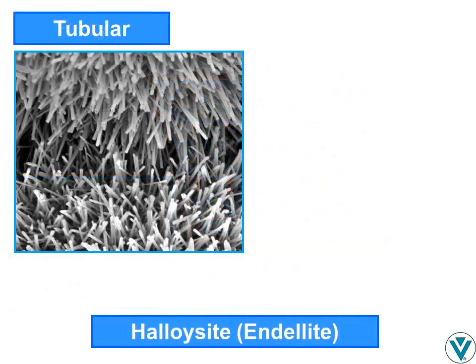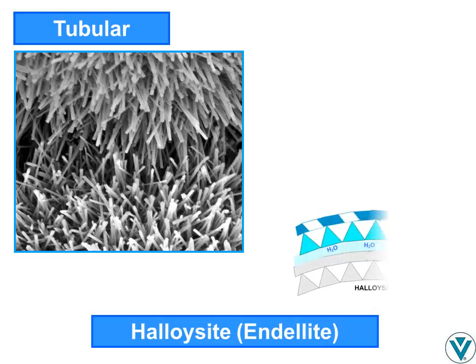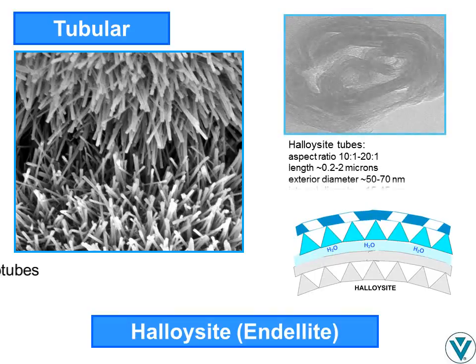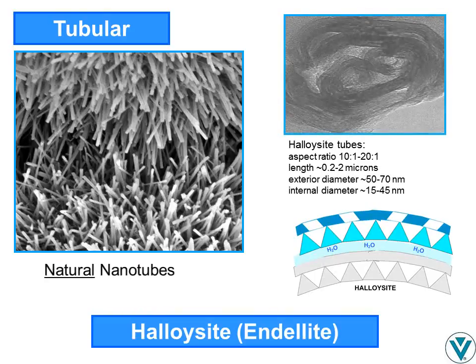When the kaolin crystal structure forms in an environment that allows it to remain hydrated — that is, to retain the layer of water between the crystals — the curvature induced by the slight tetrahedral-octahedral mismatch is not inhibited. The result is halloysite, also known as endellite in Europe, which forms with a hydrated kaolin-like structure and exists typically as rolled tubes.